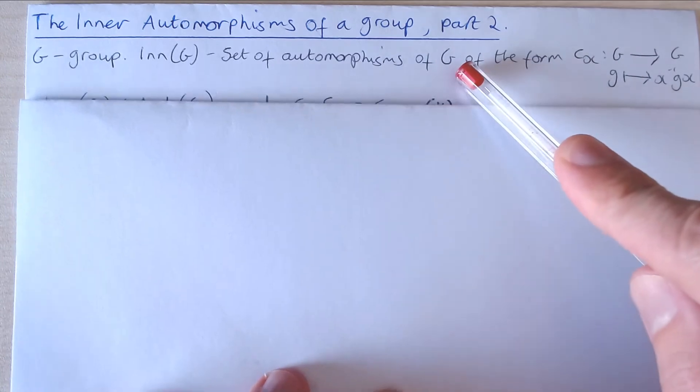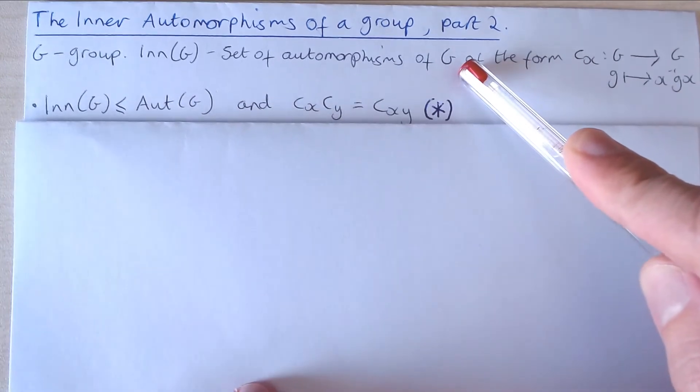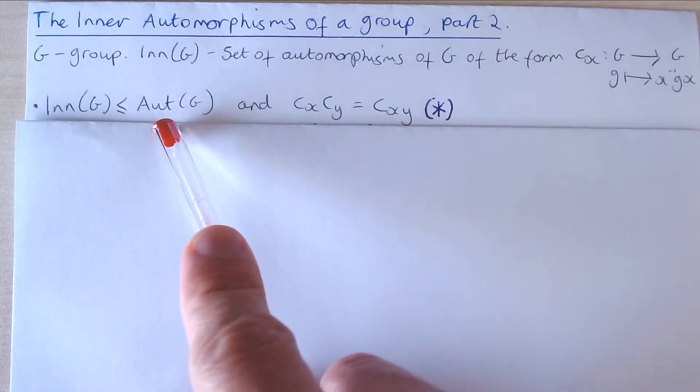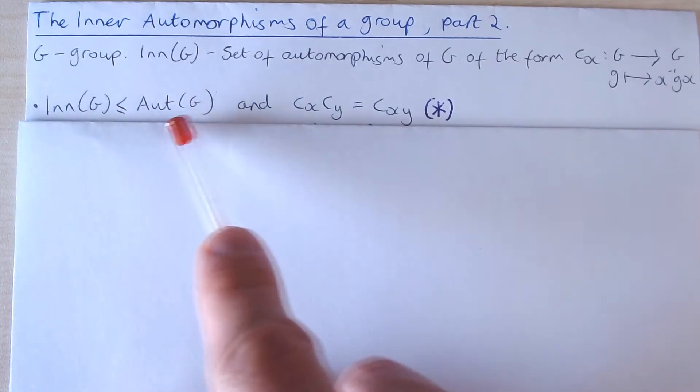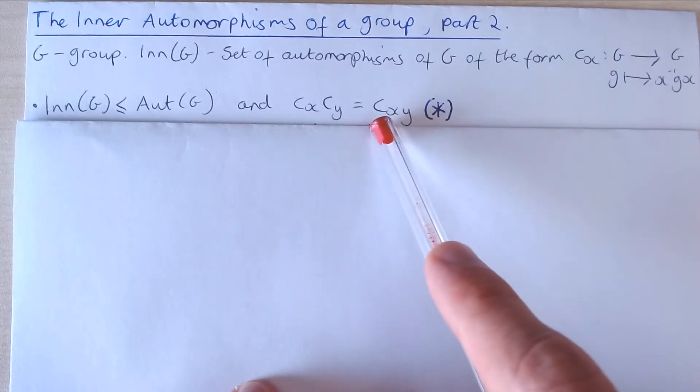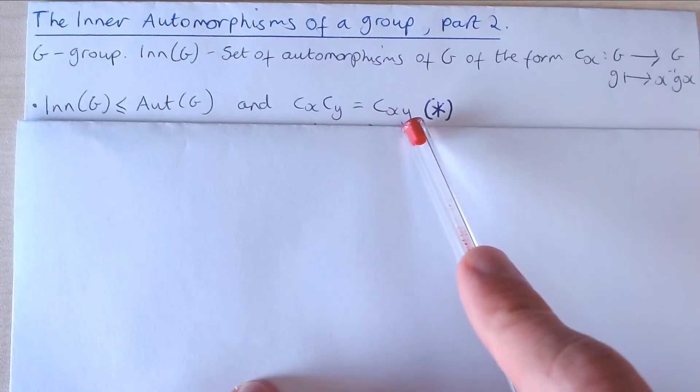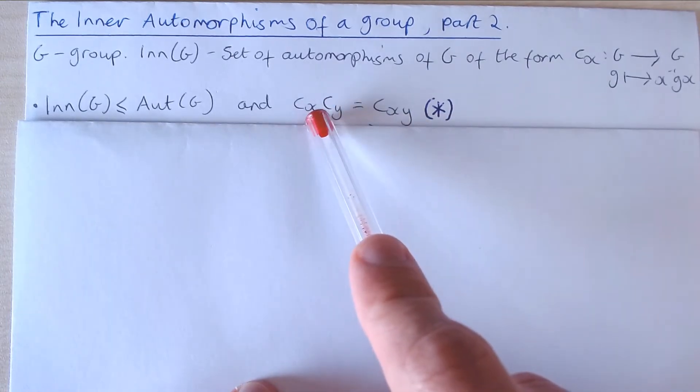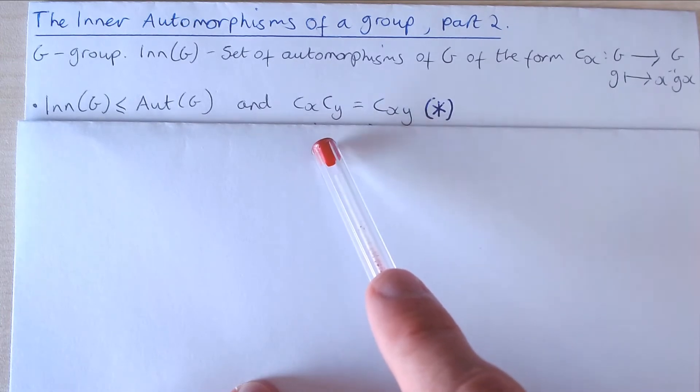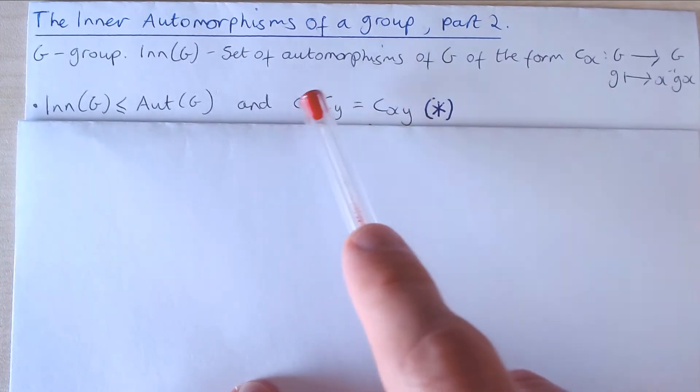In the last part, we showed that the set of inner automorphisms of G is actually a subgroup of the larger automorphism group of G. And we showed that when x and y are elements of G, the inner automorphism C_xy is actually equal to the composition of the inner automorphisms C_x followed by C_y, where we recall that we are composing these automorphisms from left to right.